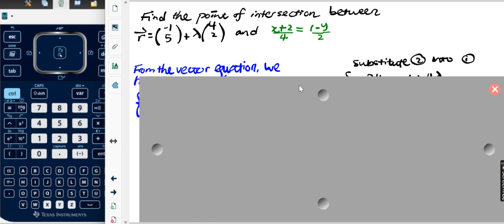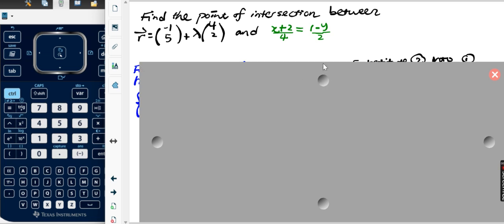Today we're going to look at this particular problem: find the point of intersection between two lines. This one is a vector equation, and over here is a Cartesian equation. So it's possible that you get the lines in two different forms, vector and Cartesian equation or some other forms.